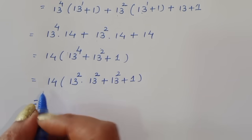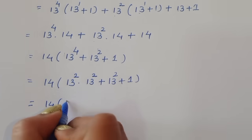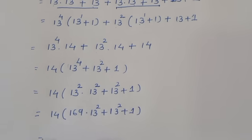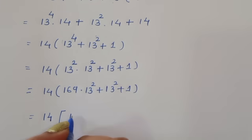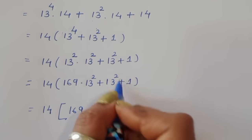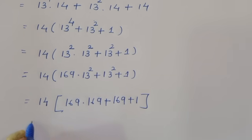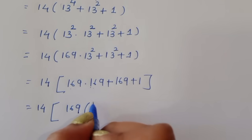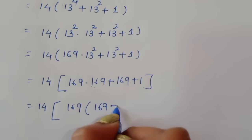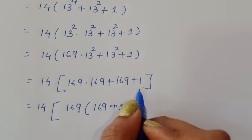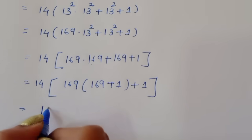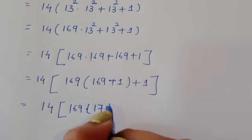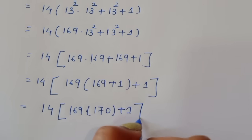We can write this as 14 times 13 power 2. Now 13 squared is 169, so we have 14 times 169 times 169 plus 169 plus 1. We can take 169 as common, giving 169 times (169 plus 1) plus 1, which is 169 times 170 plus 1. So we get 14 times (169 times 170 plus 1).